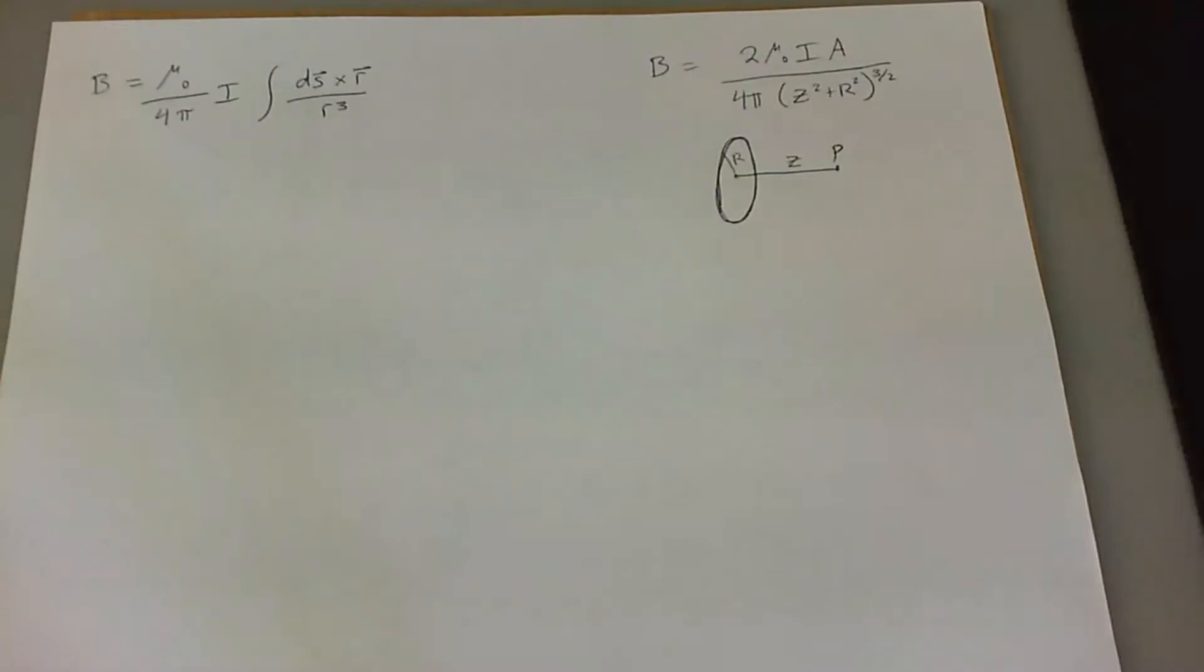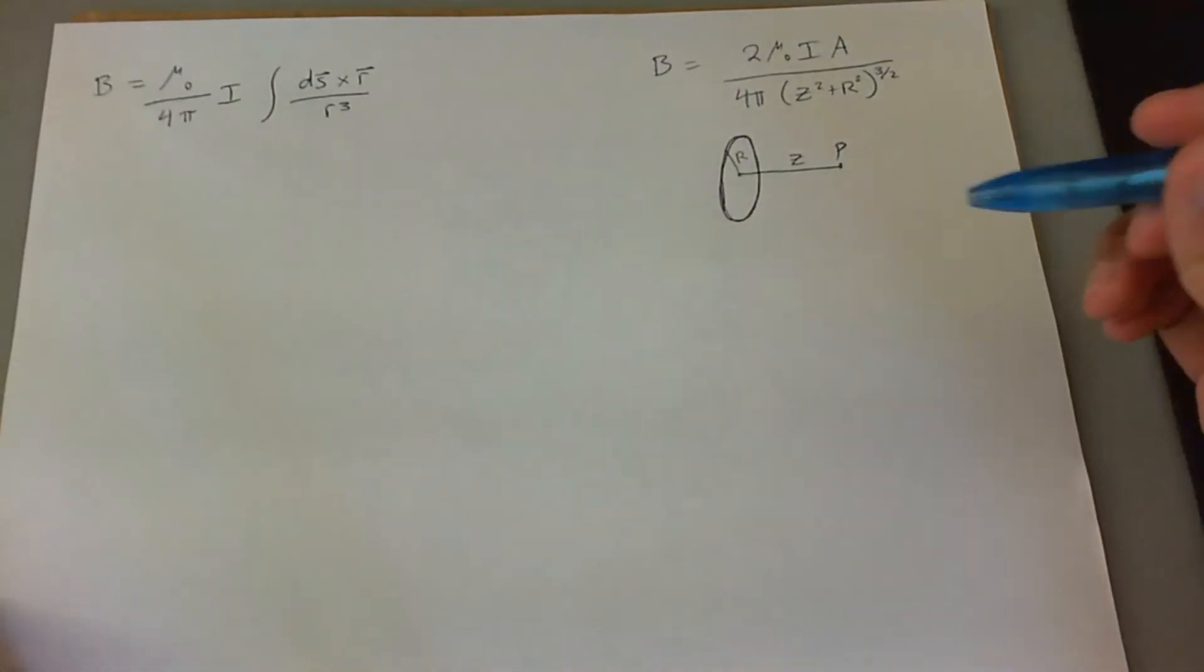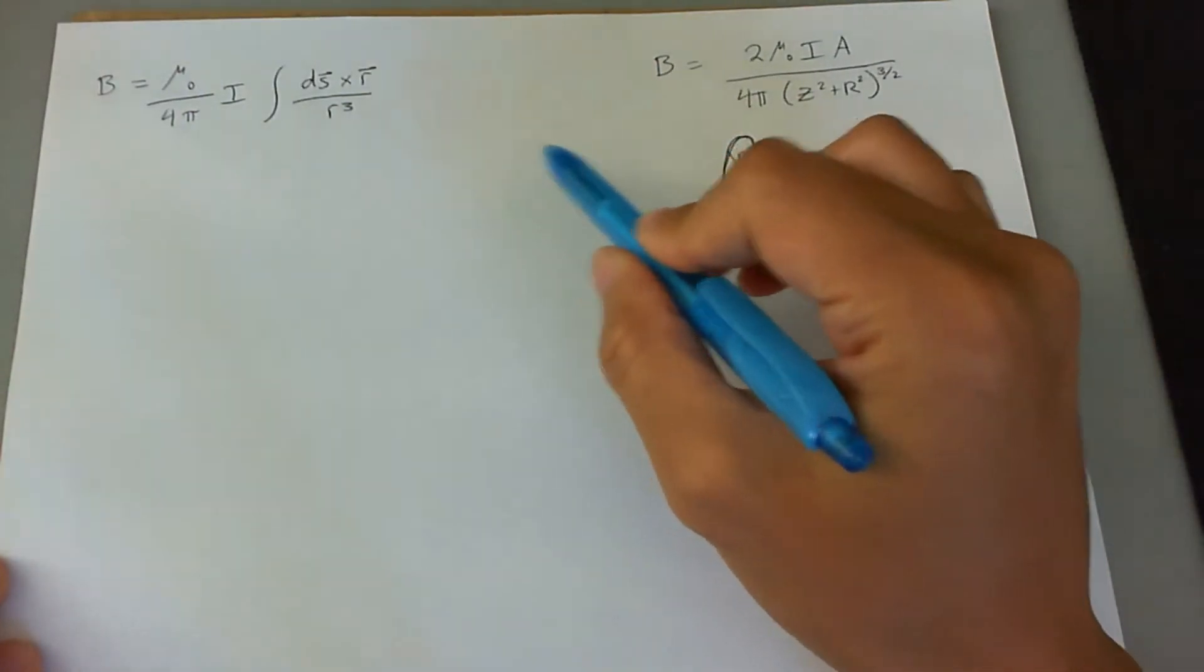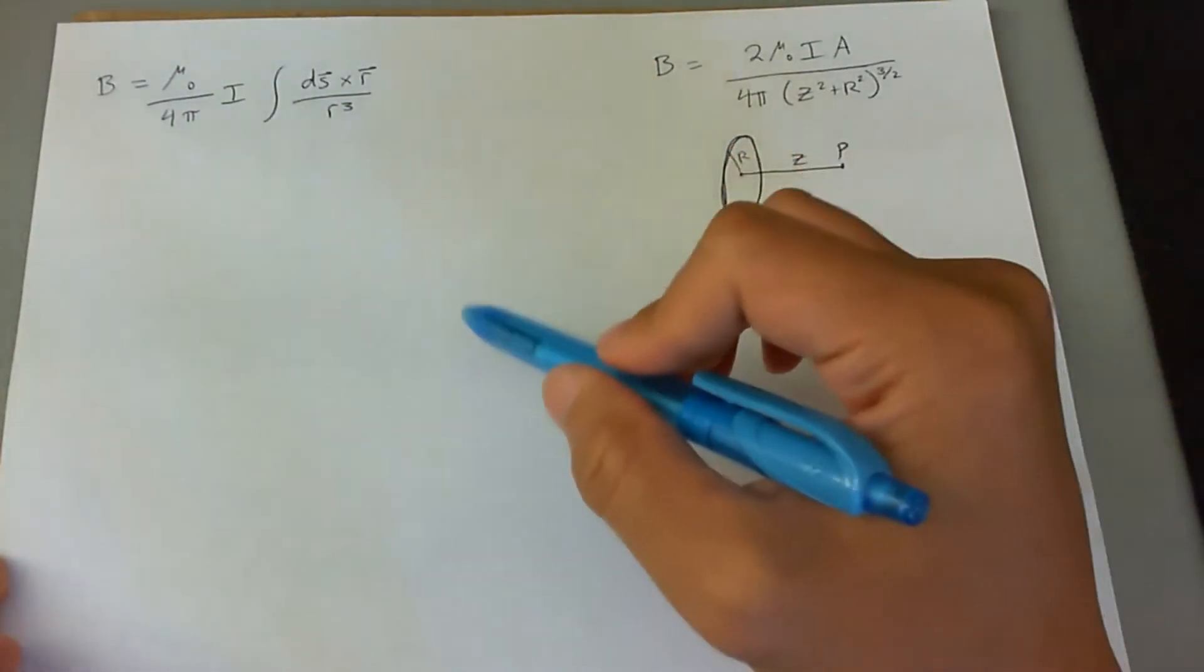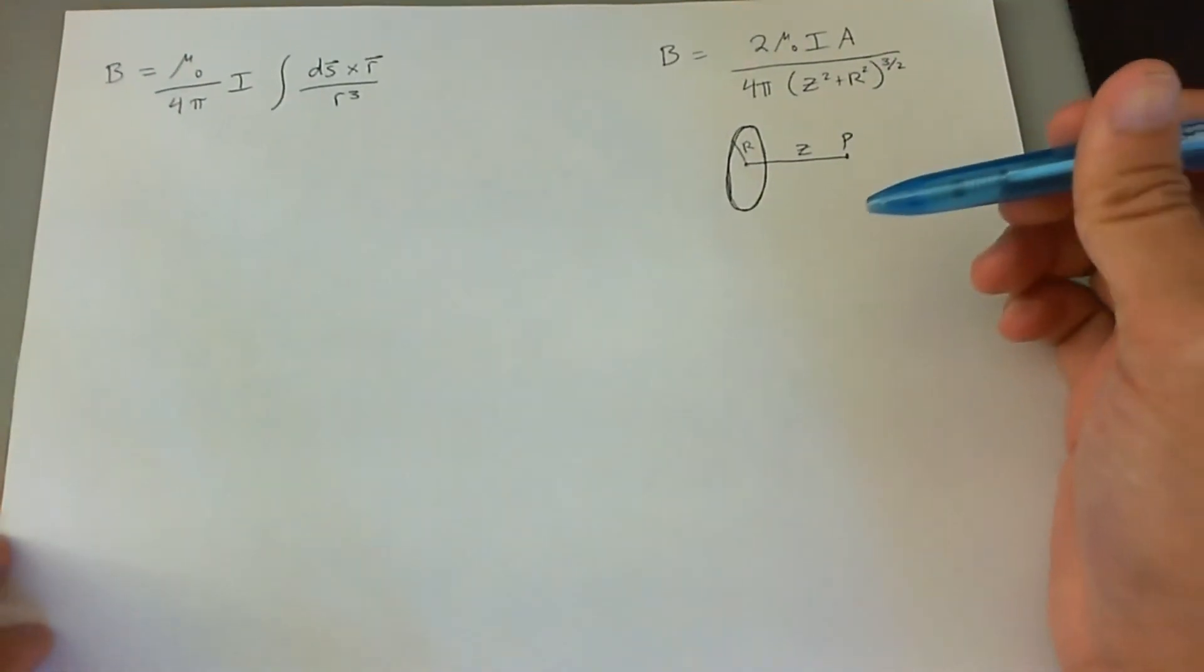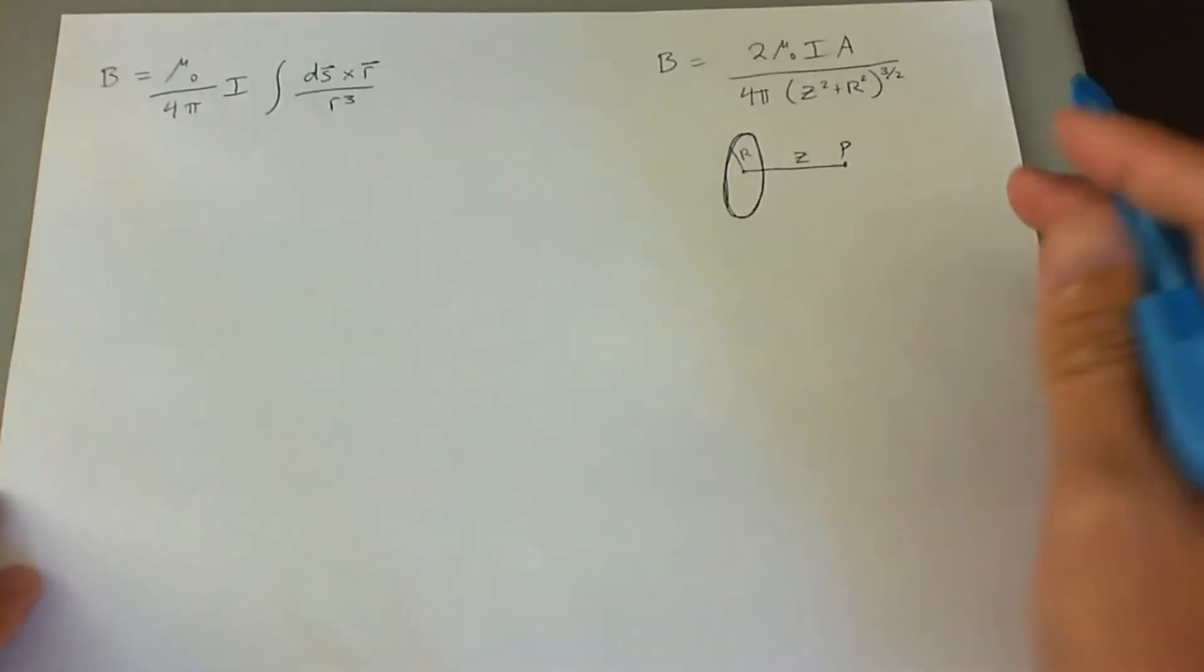I'm going to show you two ways of solving this problem. This is really just a quarter turn circle of charge which produces a B field, and we need to find the B field in the center of that quarter turn circle.